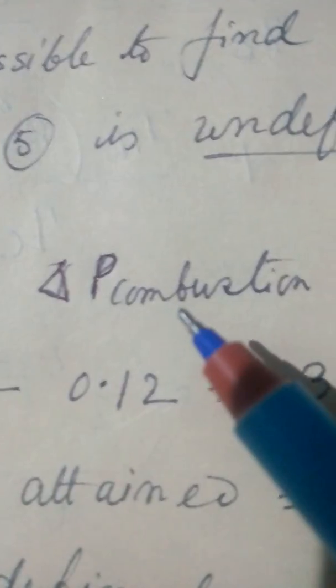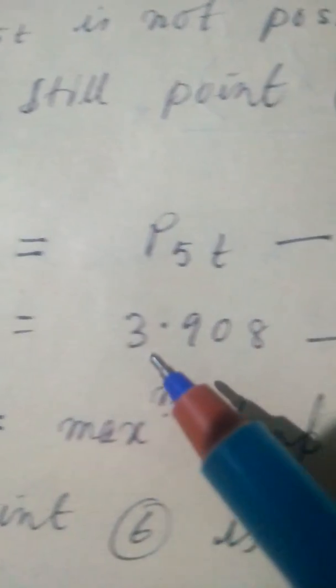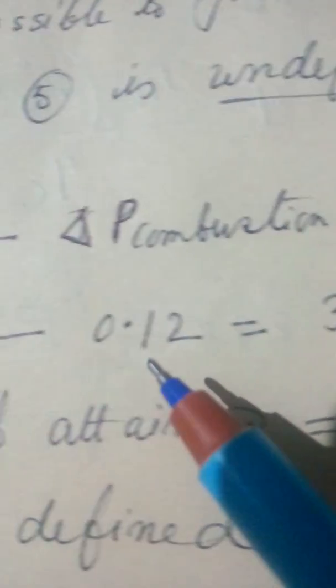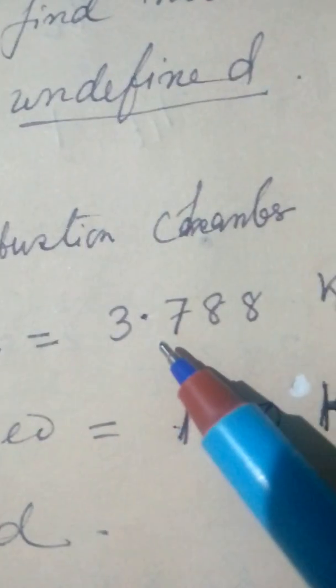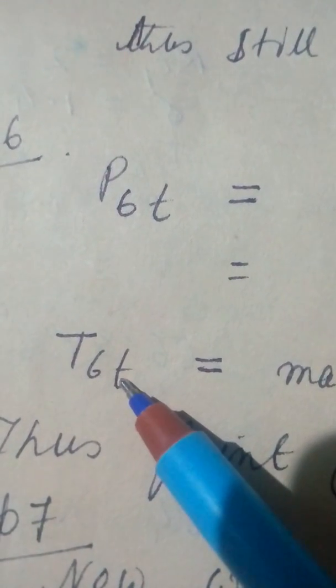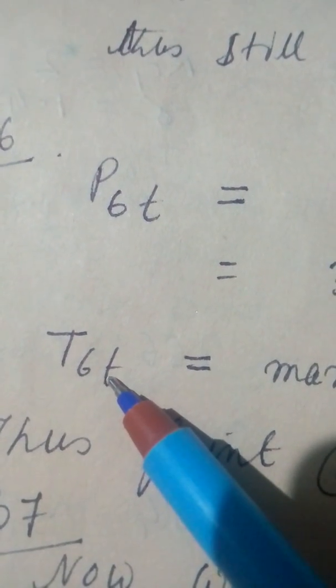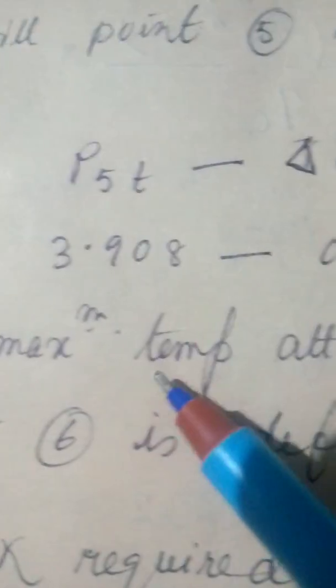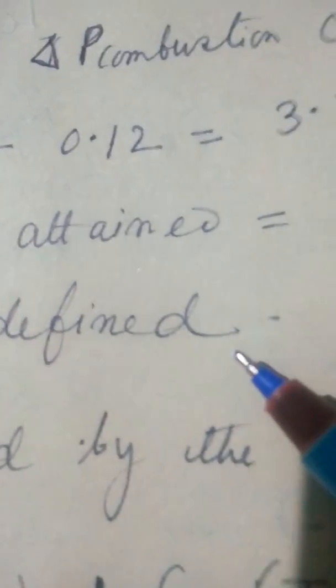Point 6. Step 6. Same delta P in combustion chamber, it is given 0.12 is given, pressure loss. So T6T is equal to, now it is to be understood that T6T is the T6T and T8T, this will be the maximum temperature. T6T and T8T, this is the maximum temperature of the plant, it is 1000 Kelvin given in the problem. Thus point 6 is defined.